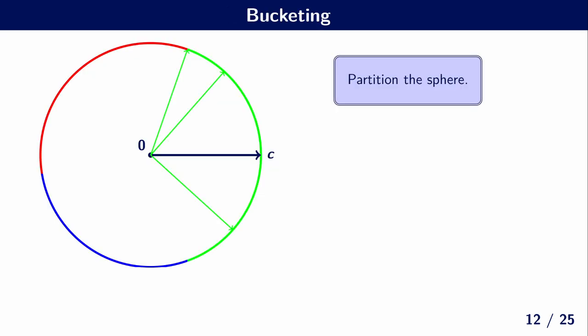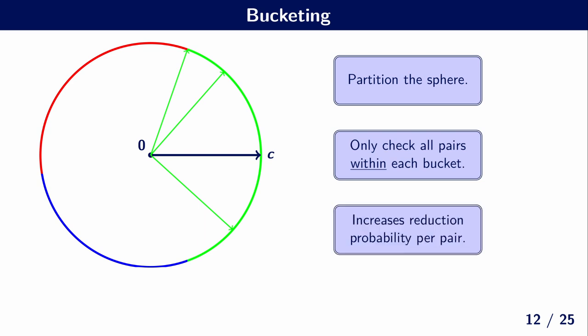So we start with discussing this bucketing. What we want to do is we want to partition the sphere and thereby partition our database. So suppose we have some bucket center c, then we want to find all the vectors in our database that are somewhat in the direction of c. And then this gives us a bucket, and then what we want to do is we want to only check for pairs within each bucket if they are close to each other. And because they are already pointing somewhat in the same direction, this heavily increases the reduction probability per pair.